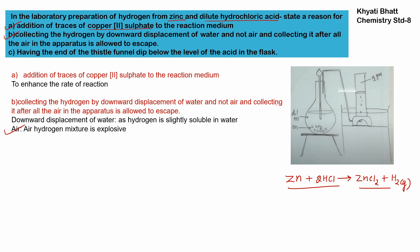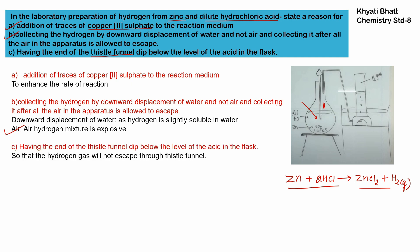The third point is having the end of the thistle funnel dipped below the level of acid in the flask. As seen in the figure, the thistle funnel's end is inside the acid, not above it. The reason is that if the funnel's end were above the acid, hydrogen bubbles could escape through the thistle funnel. Keeping it dipped inside the hydrochloric acid prevents hydrogen from escaping, ensuring no loss of gas.